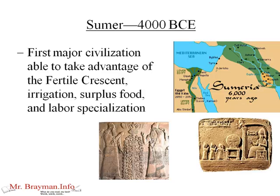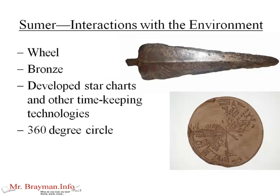The first big civilization in this region is Sumer. Sumeria is the name of the region, and they get going right around 4000 BCE. They were the first major civilization to take advantage of the Fertile Crescent — they had irrigation, surplus food, and labor specialization. They also built key technologies: they had the wheel, they were able to use bronze, they developed star charts and other timekeeping technologies, as well as the concept of the 360-degree circle. So even in 4000 BCE, they were pretty sophisticated in their math and technology.